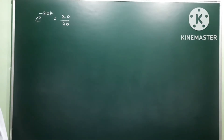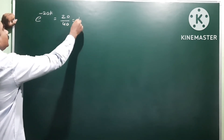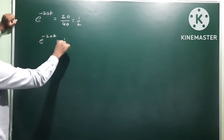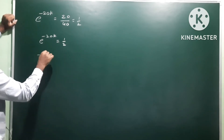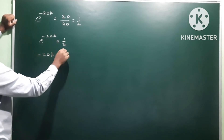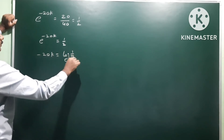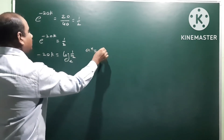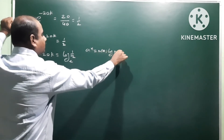Therefore e power minus 20k is equal to 20 divided by 40, which equals 1 by 2. So minus 20k equals log 1 by 2. Since 1 by 2 is 2 power minus 1, applying logarithm gives minus 20k equals minus log 2.